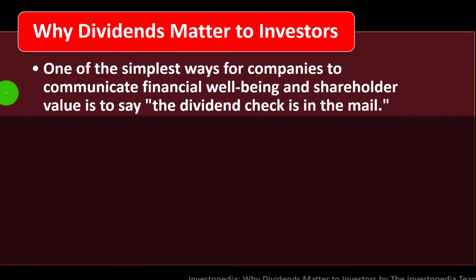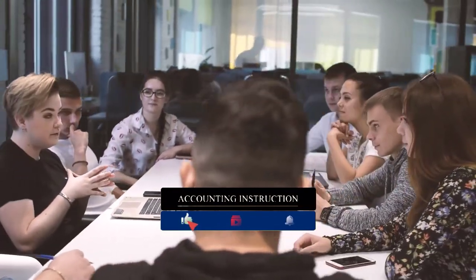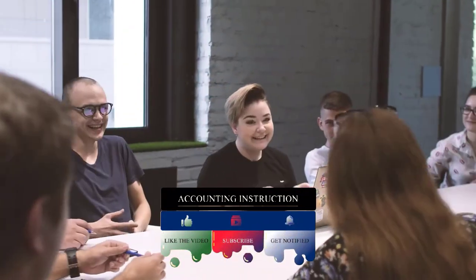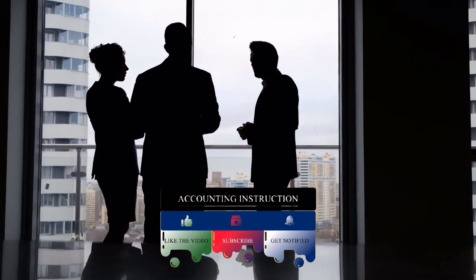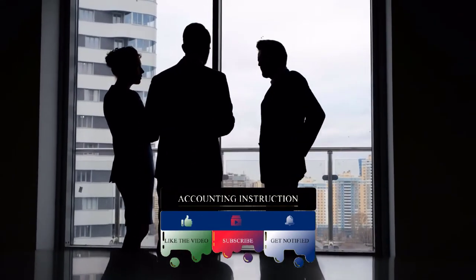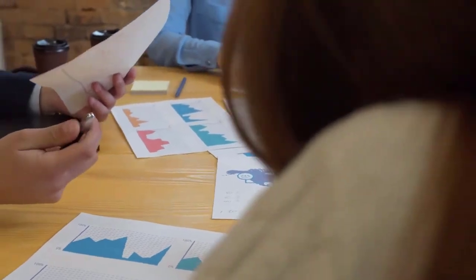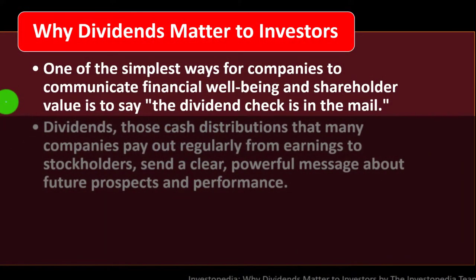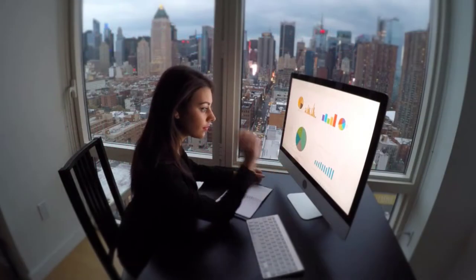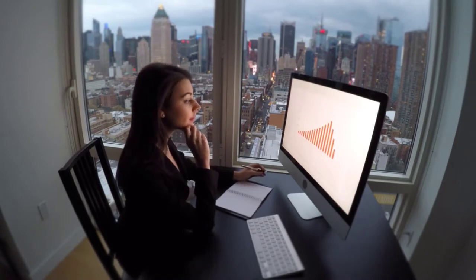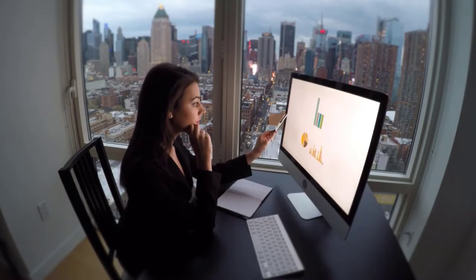One of the simplest ways for companies to communicate financial well-being and shareholder value is to say the dividend check is in the mail. When a company gives a dividend, that not only benefits the owner in cash terms, but also signals that the company feels strong enough to give money out and still have the funds necessary to meet their needs. However, that signal can differ depending on whether we're talking about growth stocks versus blue chip stocks.